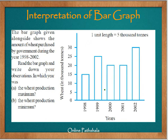Here you can see a bar graph where the x-axis represents the years from 1998 to 2002. On the y-axis we have wheat in 1000 tons, and the scale is given as one unit length equal to 5000 tons. So this one unit is actually representing 5000 tons.